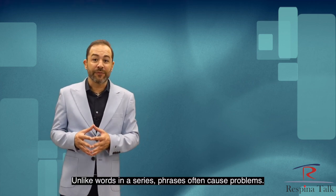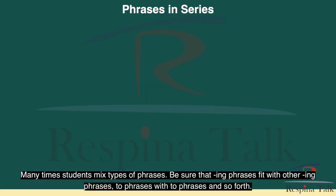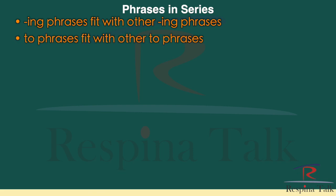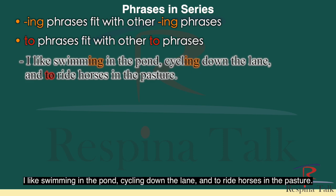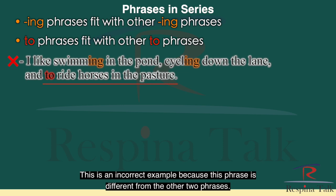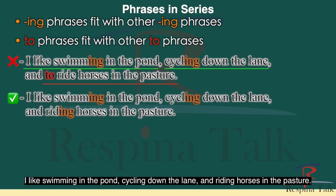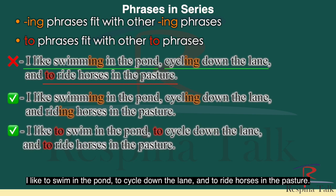Unlike words in a series, phrases often cause problems. Students often mix types of phrases. Be sure that ING phrases fit with other ING phrases, TO phrases with TO phrases, and so forth. An incorrect example: "I like swimming in the pond, cycling down the lane, and to ride horses in the pasture" — because "to ride" is different from the other two ING phrases. The correct form: "I like swimming in the pond, cycling down the lane, and riding horses in the pasture." Or: "I like to swim in the pond, to cycle down the lane, and to ride horses in the pasture."